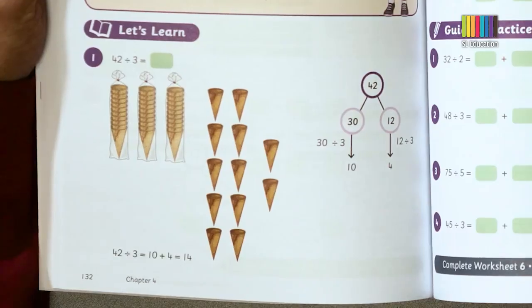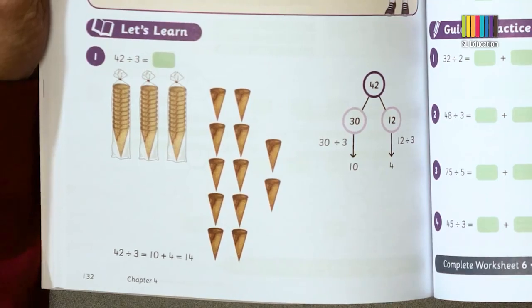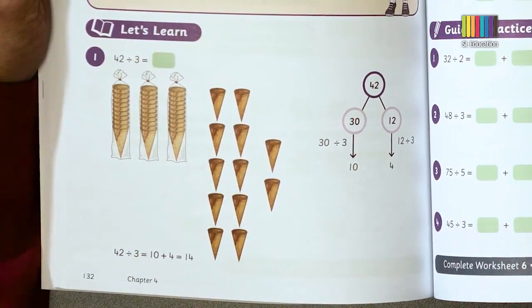The fourth kind of journal is the investigative journal. In investigative journals, students use their journals as a logbook, recording the results of their investigation. For example, after finding that 42 divided by 3 is 14, the teacher may ask students to investigate: what are the two-digit numbers divided by other one-digit numbers that give the same quotient of 14? Students record their findings in the journal.